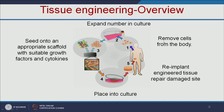The first step is to take cells from the patient's body and grow them in the lab. Once we have a sufficient number of cells, we seed them on the three-dimensional scaffold. Then the cells grow on the three-dimensional scaffold, and we can implant the engineered tissue into the repair or damaged site.